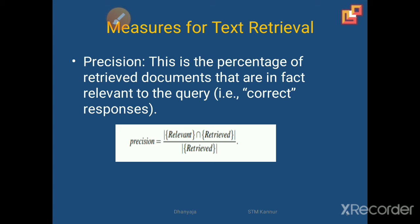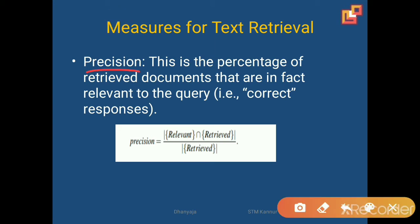For making it relevant, we have to consider some measures — how we can measure whether the data is relevant or not. Measures of text retrieval are precision and recall. What is meant by precision? A precise document means it is more accurate, more relevant, more useful to us. Precision is the percentage of retrieved documents that are in fact relevant to the query — that is the correct response. The formula is: relevant intersection retrieved, divided by retrieved.